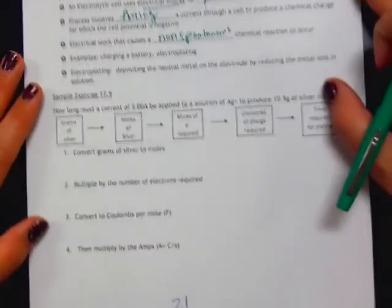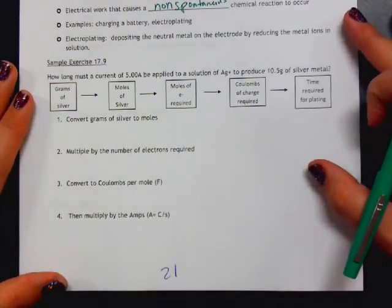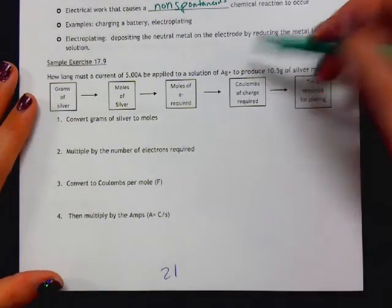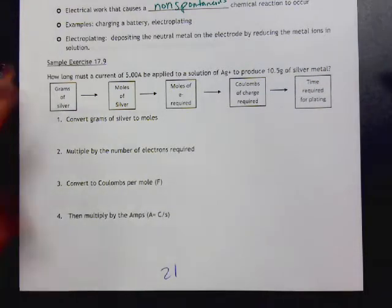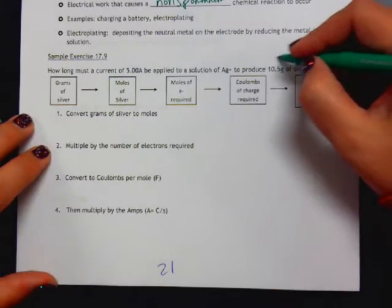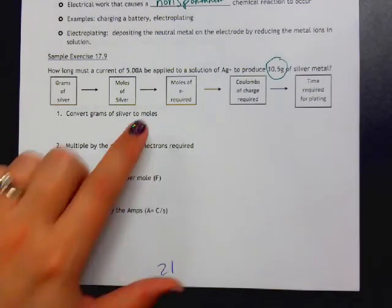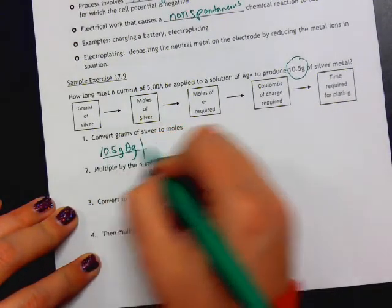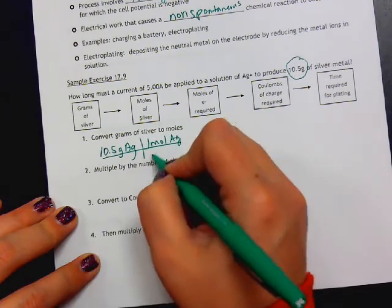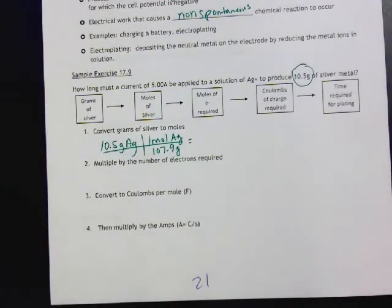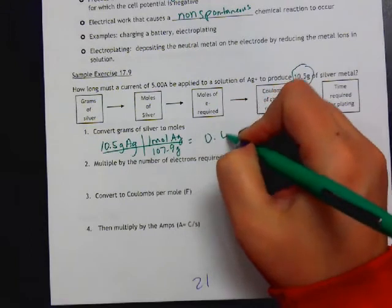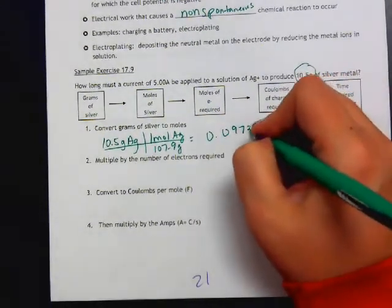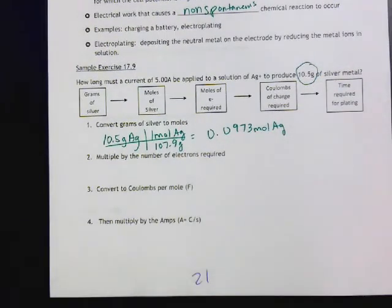This breaks down this problem into multiple steps. How long must a current of 5 amps be applied to a solution of silver ions to produce 10.5 grams of silver metal? Our first step is to start with our grams of silver metal and convert those to moles. If I have 10.5 grams of silver, I convert it to moles. 1 mole of silver is 107.9 grams. When we calculate, we find we get 0.0973 moles of silver.